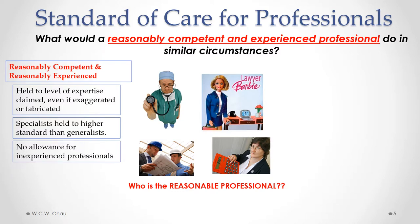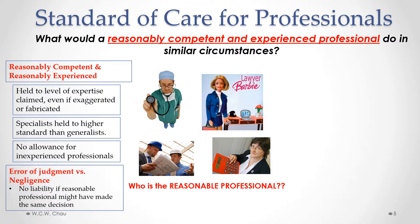If we have an inexperienced professional, let's say a lawyer fresh out of law school, we don't cut that person any slack for being inexperienced. We still hold them to the higher standard of being reasonably competent and reasonably experienced. Now, professionals are allowed to make errors of judgment and not be held liable for them. There is a difference between an error of judgment and negligence. An error of judgment is where a reasonable professional in that same situation might have made the same decision — that would be considered an error of judgment for which there is no liability under negligence.